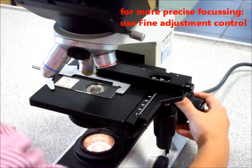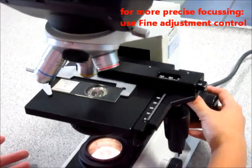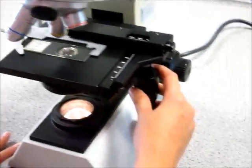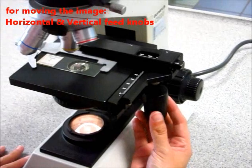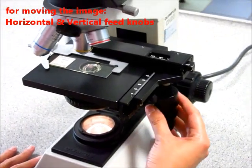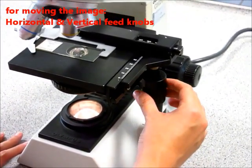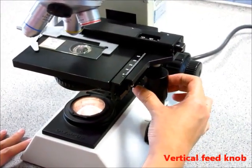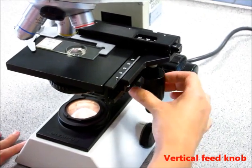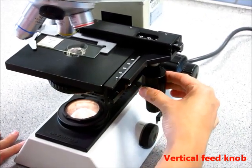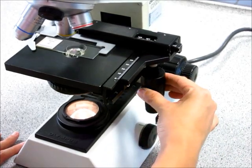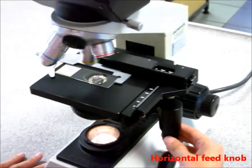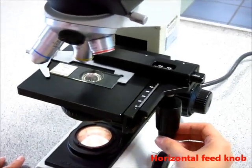So those are the knobs that you need to turn to focus the microscope. The second group of knobs that you need to turn are called the vertical and horizontal feed knob. Now they are on this side, just below the stage. The larger knob is the vertical feed knob. You can see that it causes the specimen holder with the slide to move up and down vertically. And then you have the horizontal feed knob which you turn to cause the specimen to move horizontally.